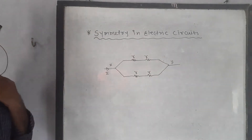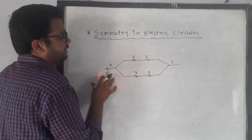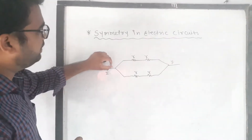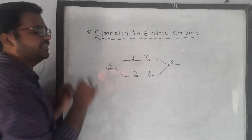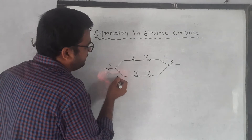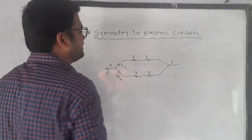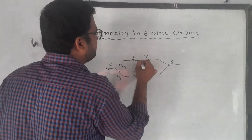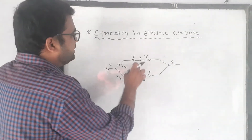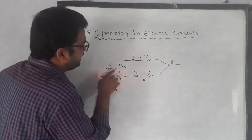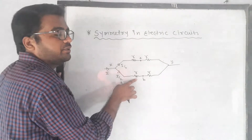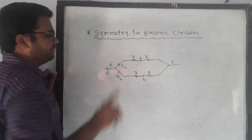We have two resistances in the upper branch and two in the lower branch. At the junction, the current divides equally — I/2 in each branch — because the circuit is symmetrical; if you place a mirror at that point it is the mirror image. After crossing one resistance, the potential at point A equals the potential at X minus (I/2)×R, and similarly potential at B equals X minus (I/2)×R, so A and B are at the same potential.